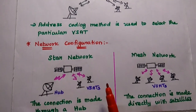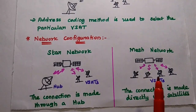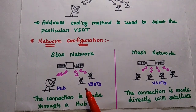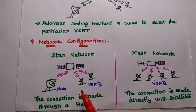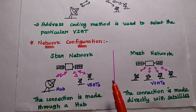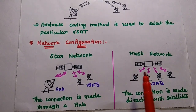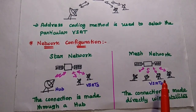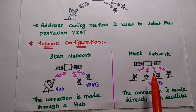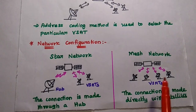There are two types of network configurations used in V-SAT: star network and mesh network. In the star network, the connection is made only through the Hub. In the mesh network, the connection is made directly with the satellite, so all V-SATs are directly connected with the satellite to receive the service.